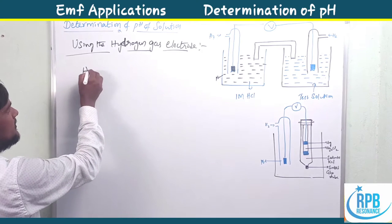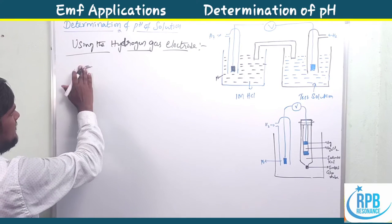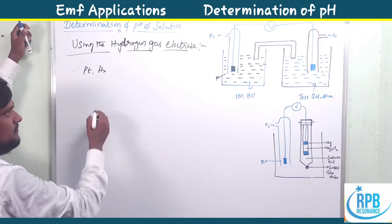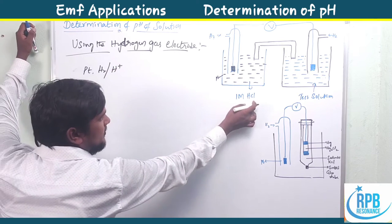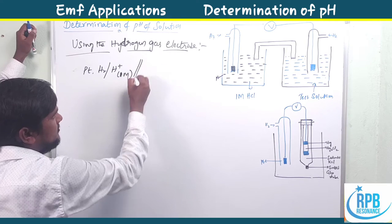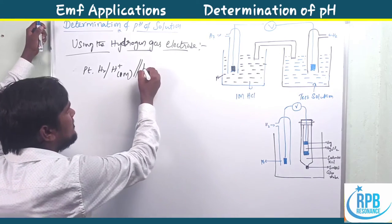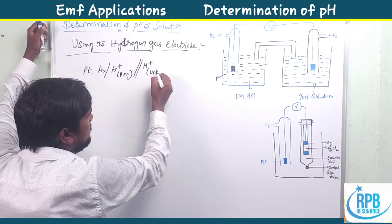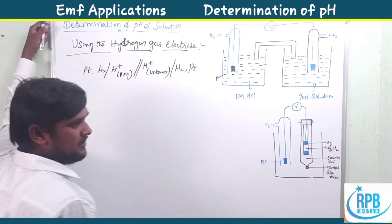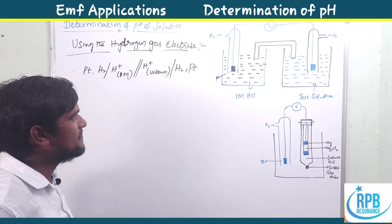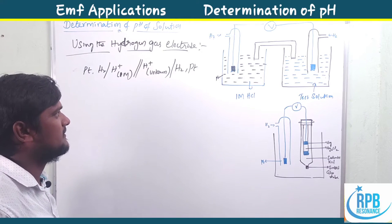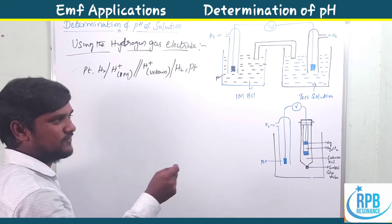In general notation, it is: Pt | H2 | H+ (1M HCl), connected through a salt bridge to the unknown solution with H+ concentration, then H2 | Pt. This is the simplest notation of the hydrogen gas electrode — the simplest representation with the test solution setup.